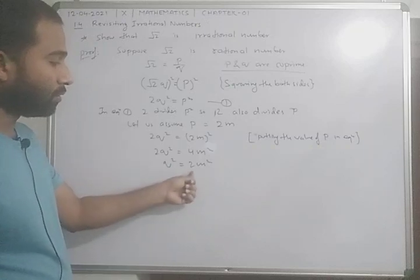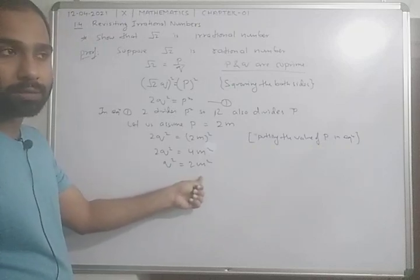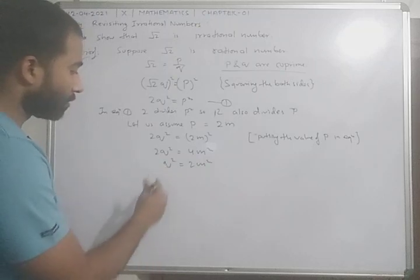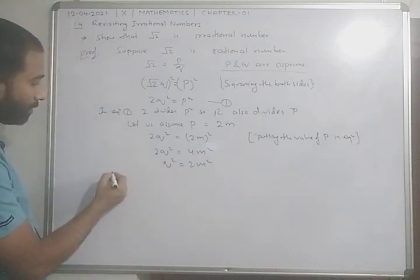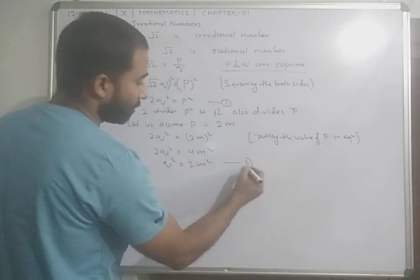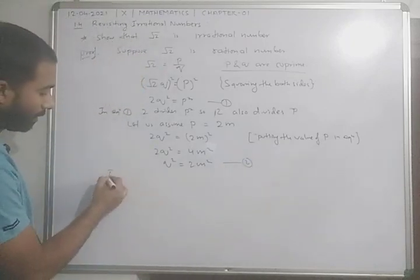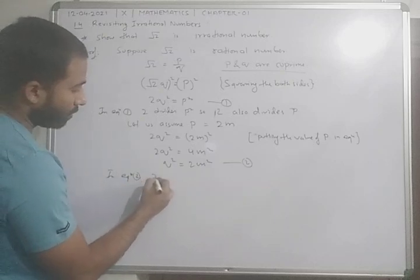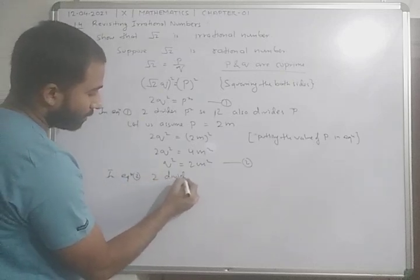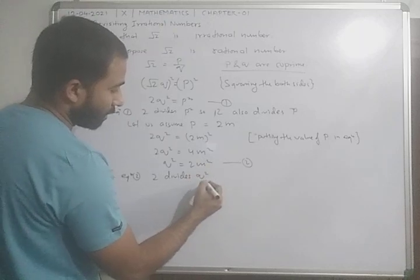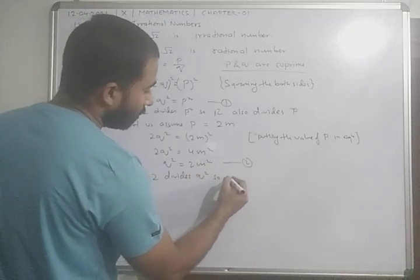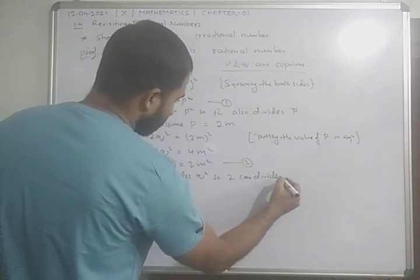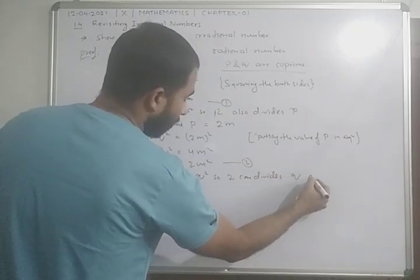You can see that 2 is a factor of M squared, and can also divide Q squared. Here again we can write in equation 2: 2 divides Q squared, so 2 can also divide Q.